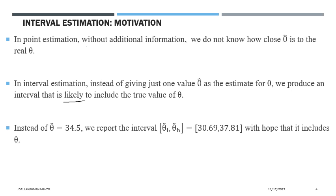For example, suppose from the data we estimate the parameter theta to be 34.5 — perhaps a mean or something similar. This is a single number: a point estimator like sample mean, sample median, or sample mode. But in interval estimation, we come up with an interval and say the true value of theta falls within it. An interval is characterized by two numbers: a starting point and an end point.